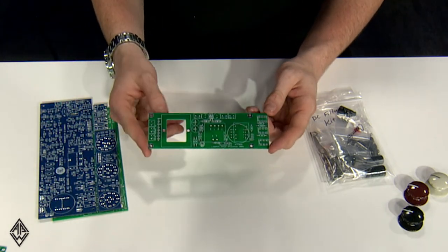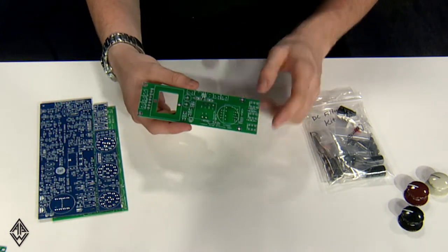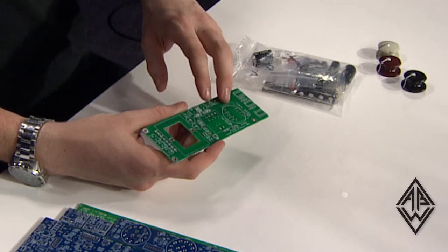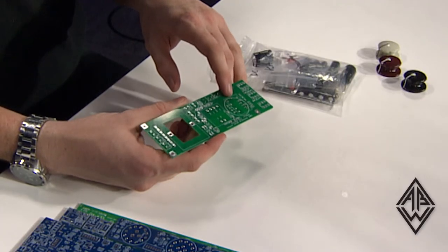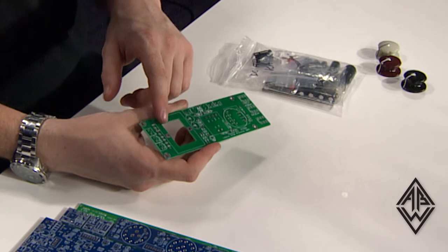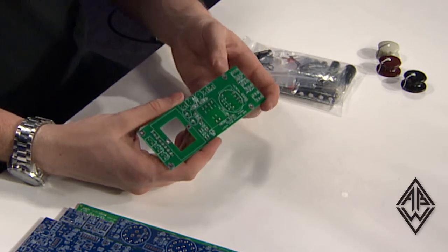Here is the 312 PCB based on an API 312. So you have space here for two different styles of input transformer. Here's space for the output transformer. You can see some clearly marked spaces for the switches.